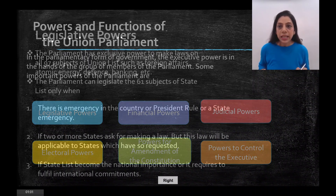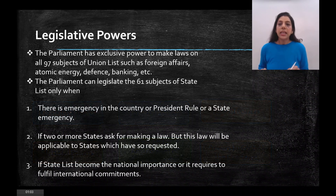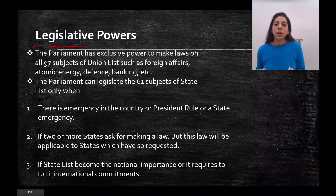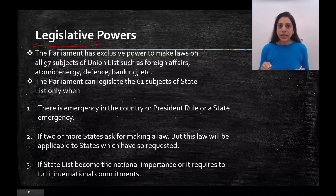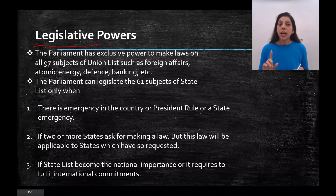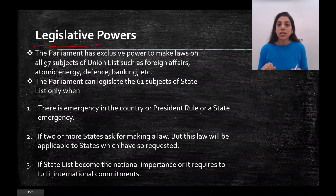We will start with legislative powers. The Parliament is the law making body and the Parliament has exclusive powers to make laws on 97 subjects. We have studied Schedule 7, there is Division of Power — Union List, State List and Concurrent List. So we are going to discuss the Union List first.